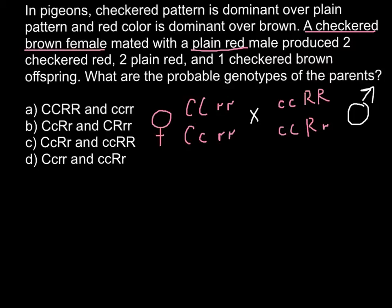Now we have to choose the correct answer. Let's start with answer A. Here we have checkered red, checkered brown, and plain red. We don't have such a parent combination, so we have to cross out this answer.